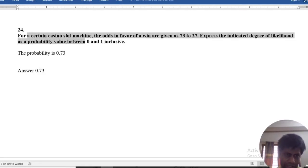For a certain casino slot machine, the odds in favor of a win are given. We need to find what's the probability and how. Our question is to express the indicated likelihood as a probability between 0 to 1.